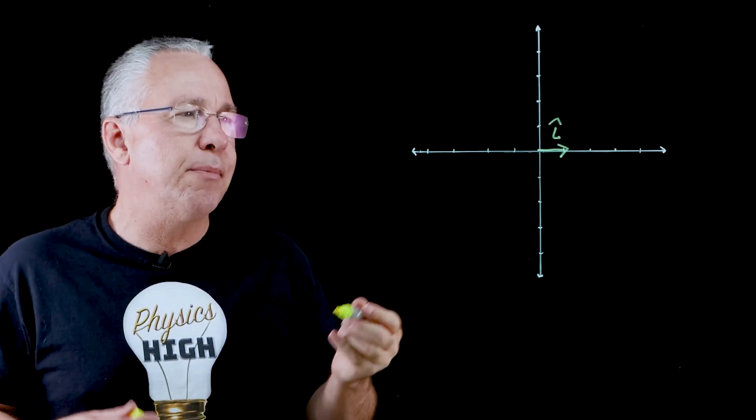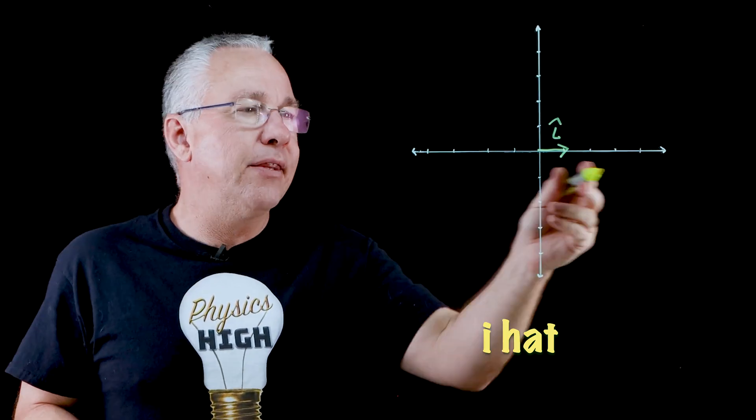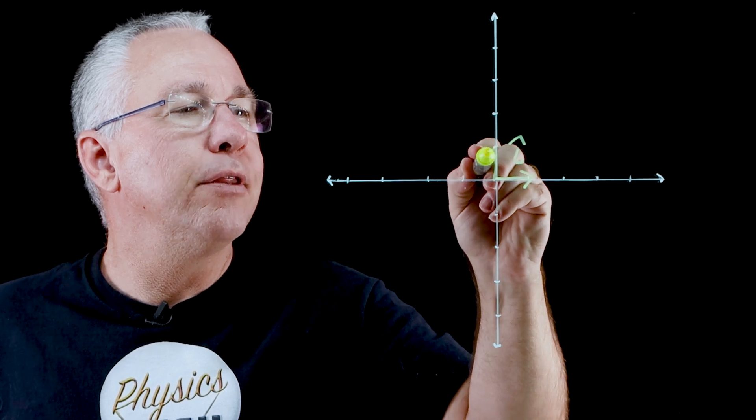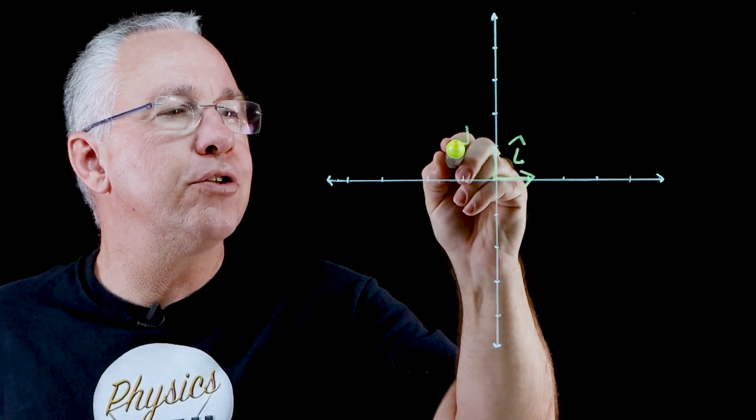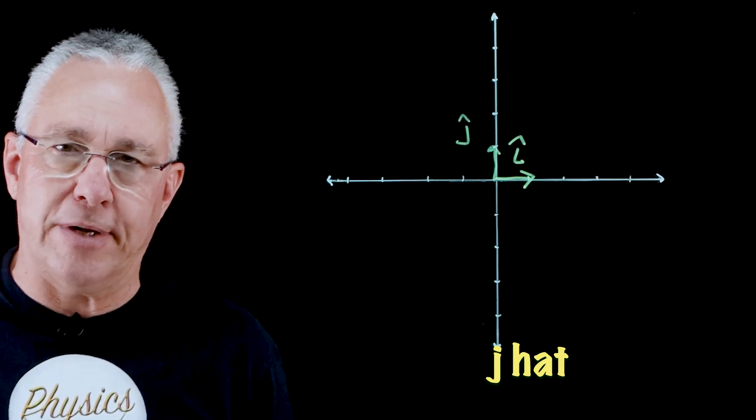We put a little circumflex at the top and we say i hat. So we have a unit vector i there along the x axis. Similarly, if I have a unit vector for the y direction, I'm going to call this j hat, and that's our single unit vector in the y direction.